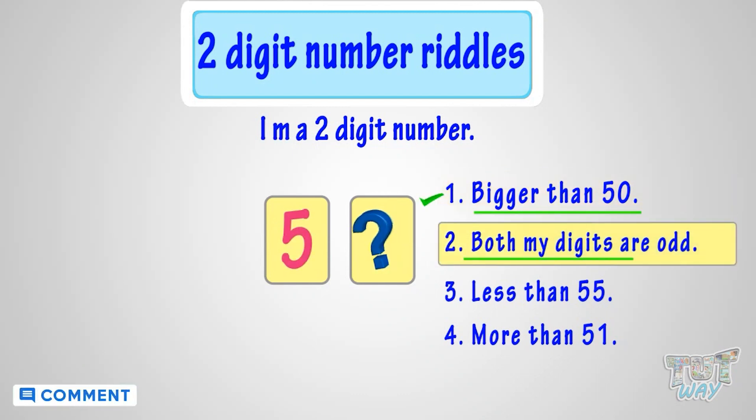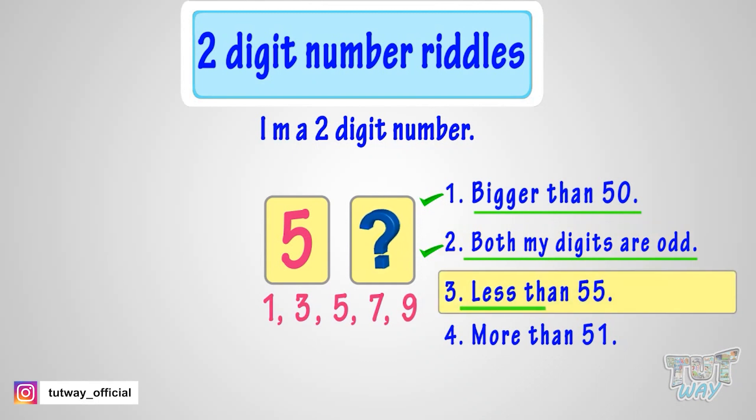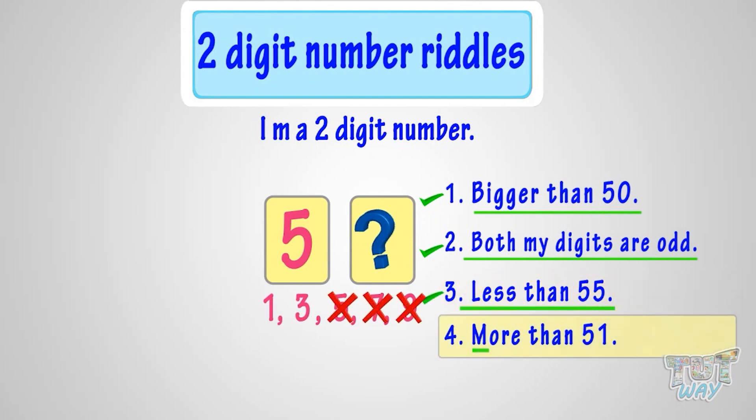Both my digits are odd, so second digit can be 1, 3, 5, 7, or 9. I am less than 55, so second digit can be 1 or 3. I am more than 51, so it is 3. We guessed the number. The number is 53.